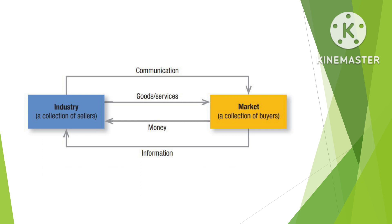Figure 1.2 shows how sellers and buyers are connected by four flows. Sellers send goods, services, and communications such as ads and direct mail to the market; in return they receive money and information such as customer attitudes and sales data. The inner loop shows an exchange of money for goods and services; the outer loop shows an exchange of information.